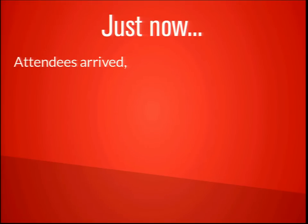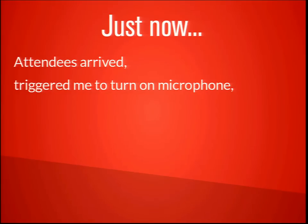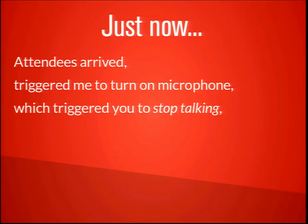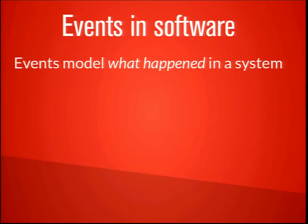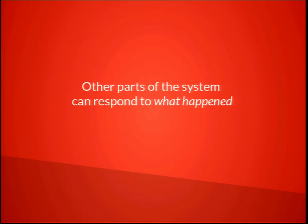Just now, a very practical example: you arrived, and that finally triggered me to turn on my microphone, which was an event that triggered you to stop talking, and then that particular event triggered me to start talking. So that is just a series of fortunate events. When it comes to events in software, this is more or less the same. Events model what happened inside a system, and the actions triggered by particular events are what happens inside other parts of the same system, and sometimes even in other systems.